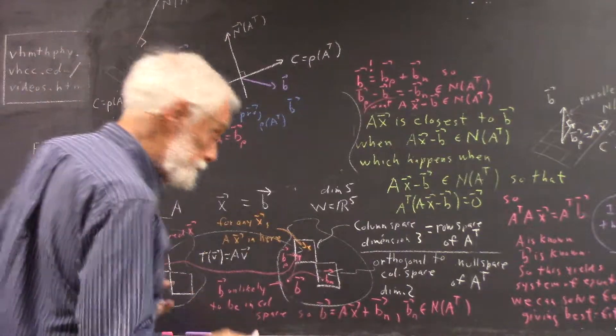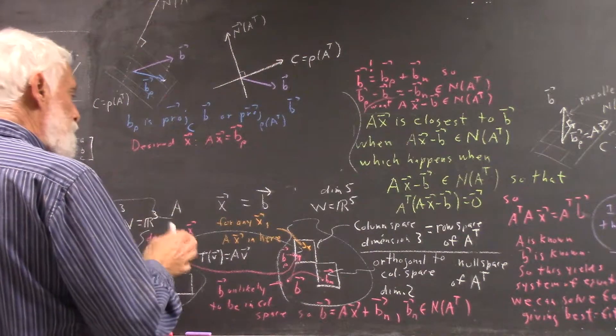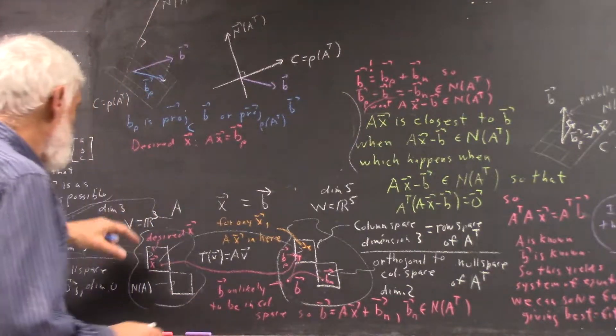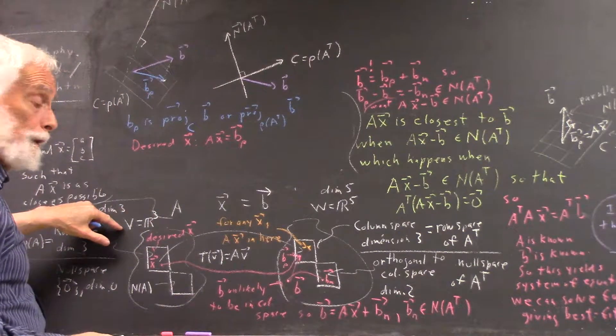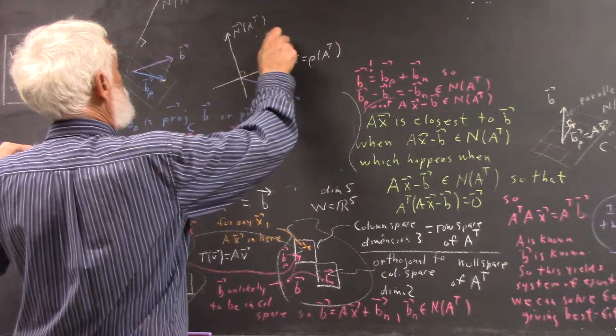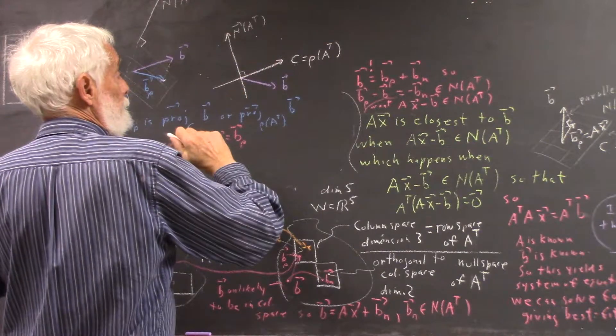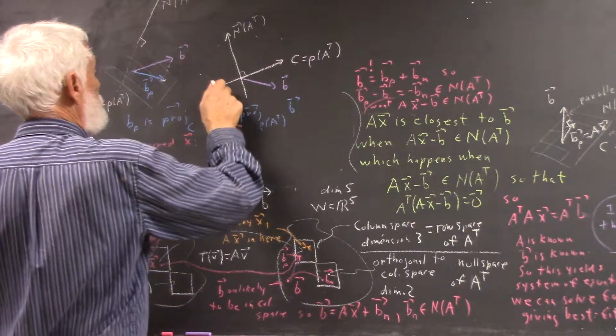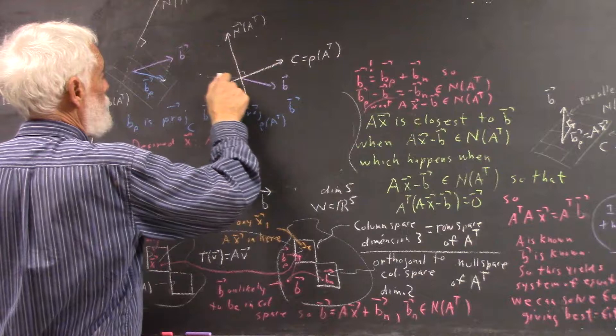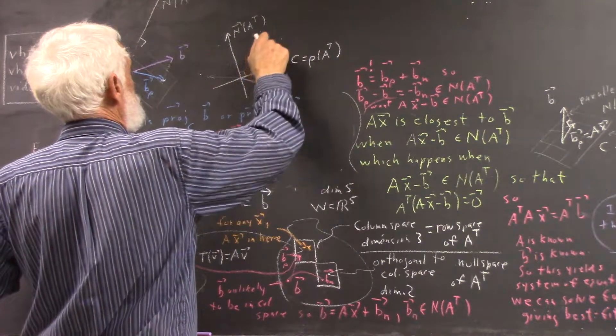Our transformation can take a vector here and map it to any vector here. So our transformation can give us any of these, a vector represented by any of these points. So for example, the vector represented by this point might be this. The vector represented by this point up here might be this. The vector represented by this point might be this.